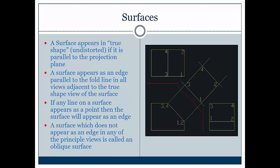A surface which does not appear as an edge in any of the principal views is called an oblique surface.